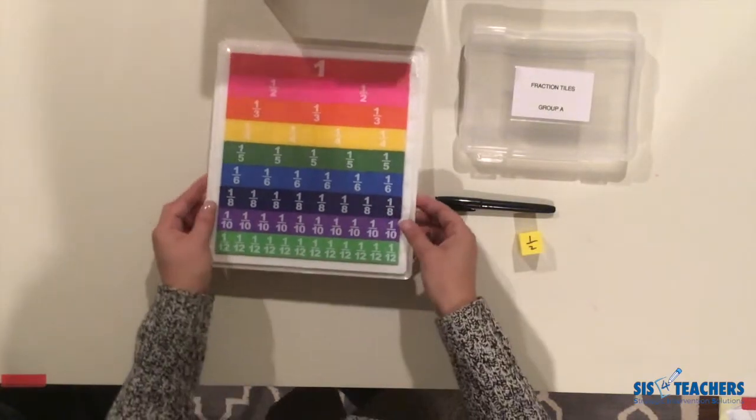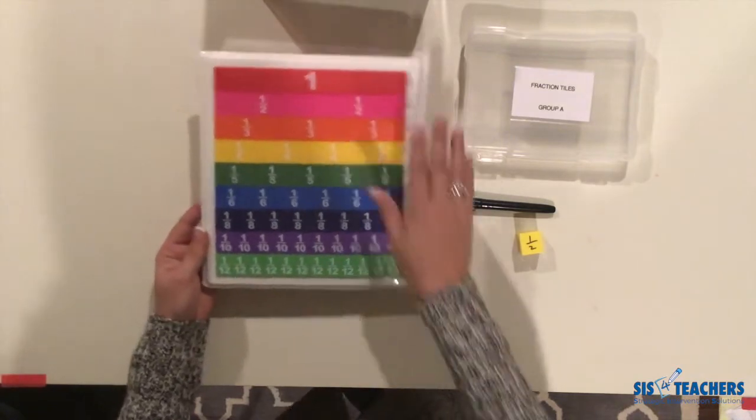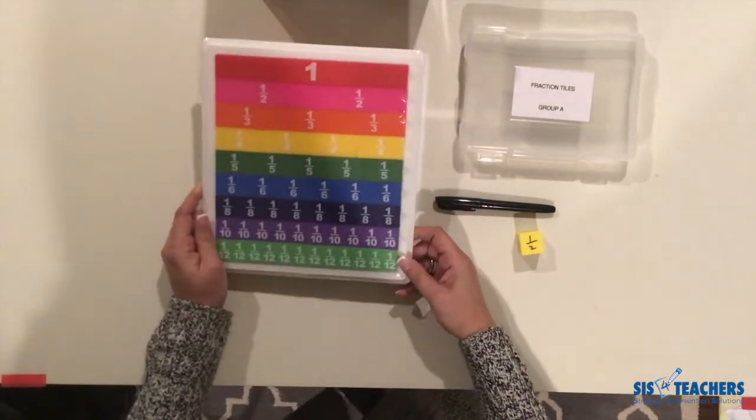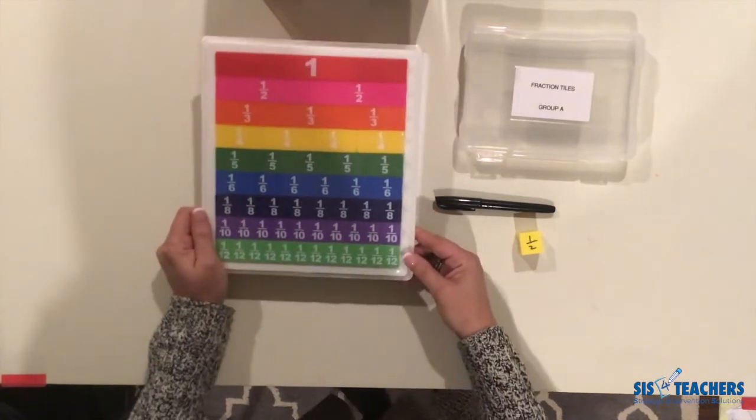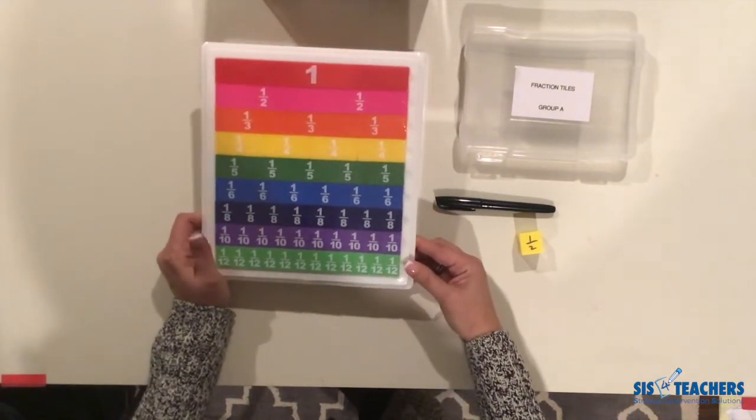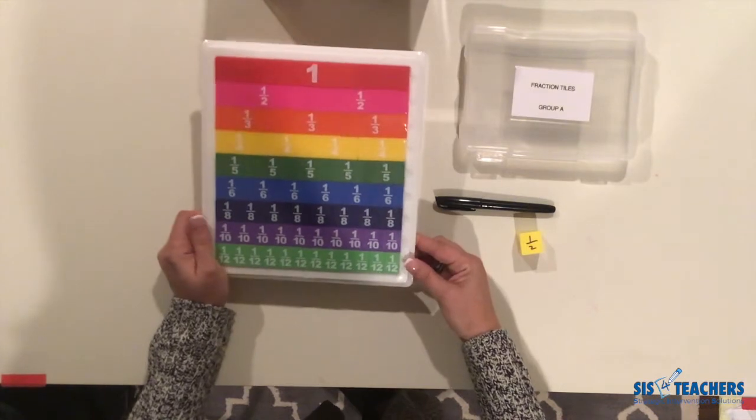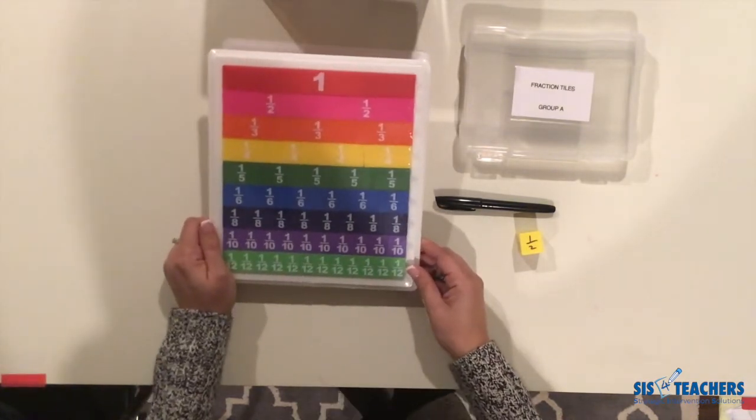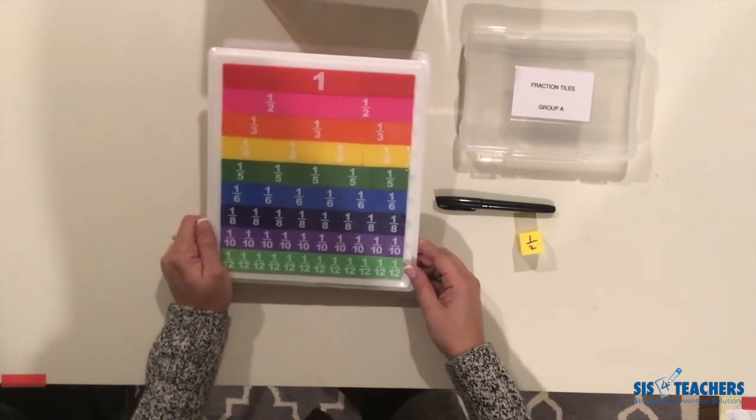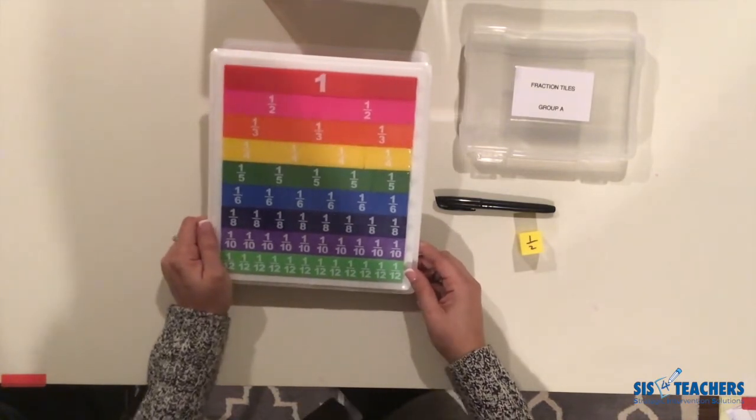The fraction tiles typically come on this nice tray and it looks beautiful while it's in the cellophane wrap. Imagine unwrapping this, sticking this into a drawer into your math salad bar, and telling groups to come up to grab things. I will guarantee you that a kid will completely dump these all over the place and you'll have fraction tiles everywhere, and your nice 20-minute modeling lesson with manipulatives will turn into an hour of a disaster.